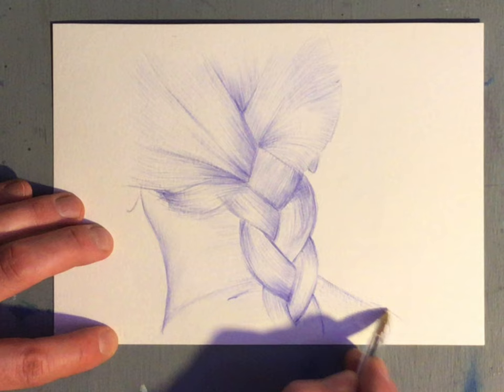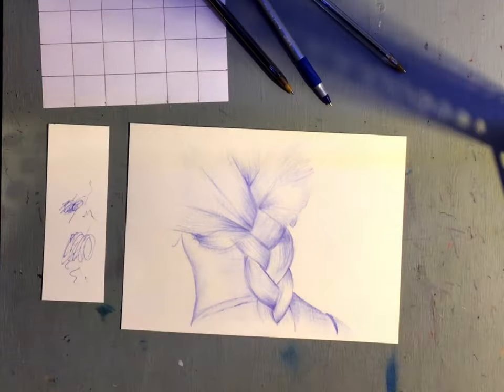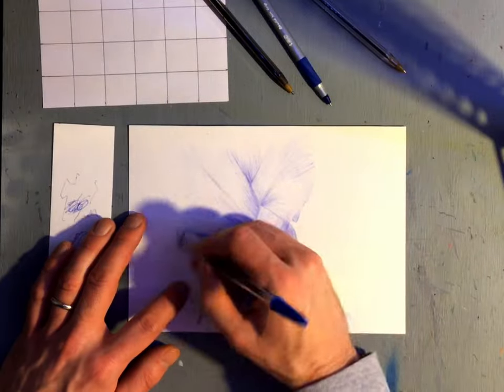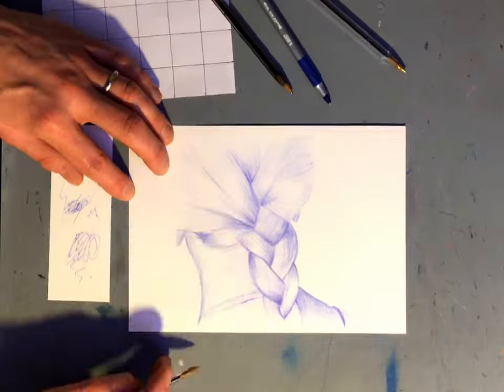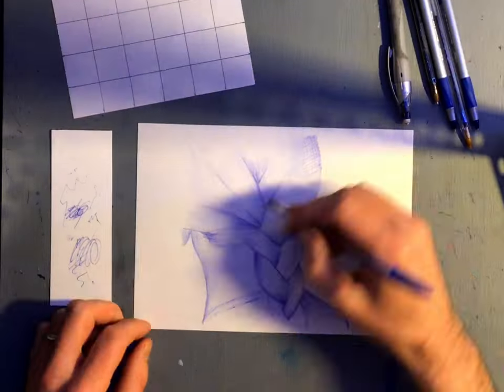And when you get to this point, you can use a little bit heavier pressure and start adding more tonal values and some cross hatching. And putting a little more ink on the places where the tonal value is darker.